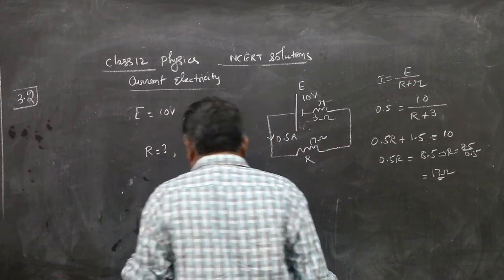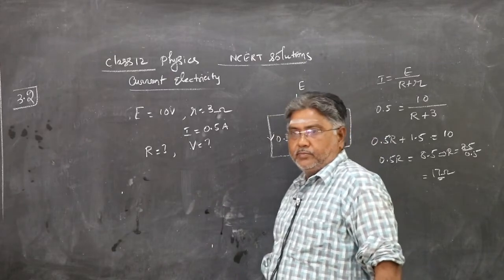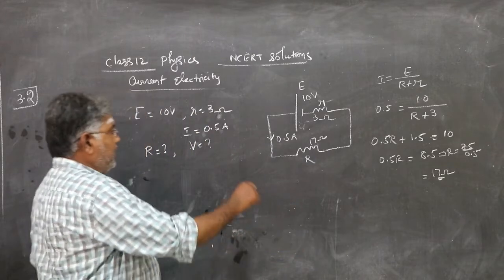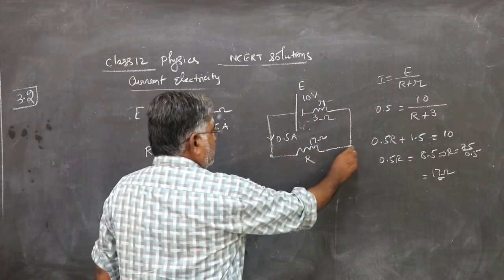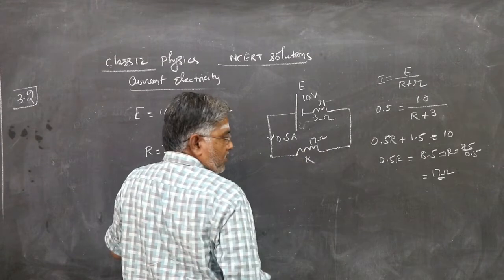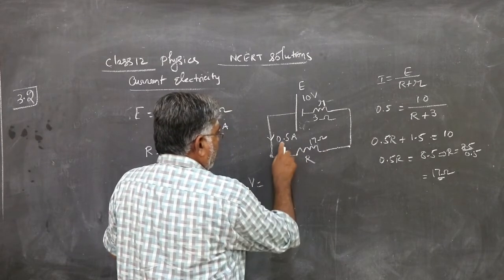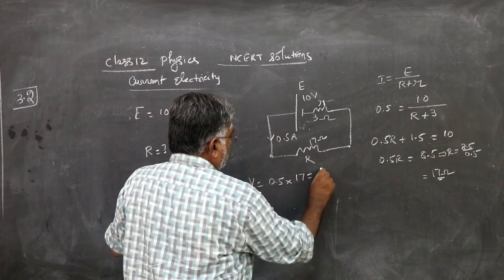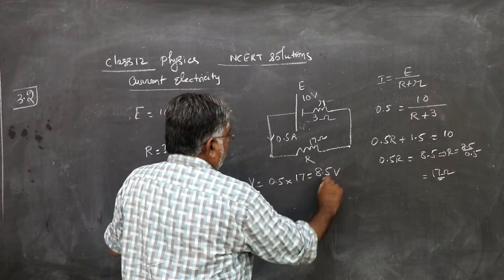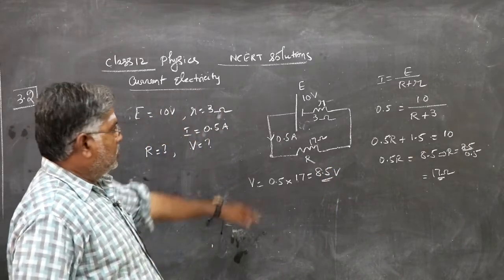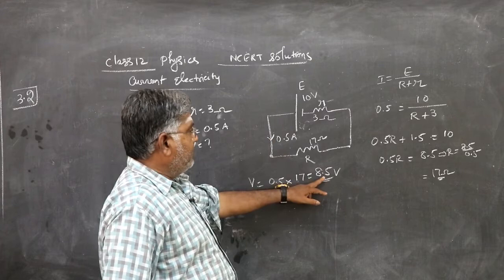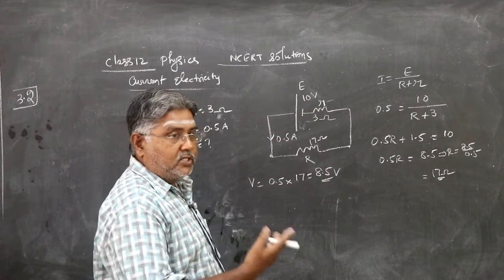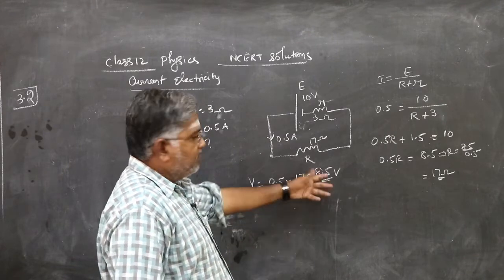You also should find terminal PD. Terminal PD will be the PD across the resistance. So, terminal PD V is, I is the current 0.5, resistance 17. So, 8.5 volt. Note that when the cell is delivering current, terminal PD 8.5 is less than the EMF. Terminal PD should be less than the EMF when the cell is delivering a current. 8.5 volt. It is correct.